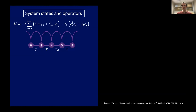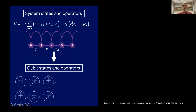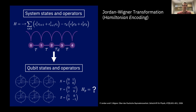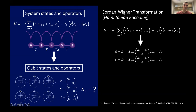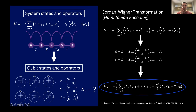To encode this Hamiltonian into our qubit and Pauli operator space, there are many transformations available. A very popular one is the Jordan-Wigner transformation. We identify a Pauli operator string where there's an implied tensor product, and we want this string to preserve the commutation relations between C and C-dagger. When we apply that transformation, we find our Hamiltonian can be encoded as an XY Heisenberg model.